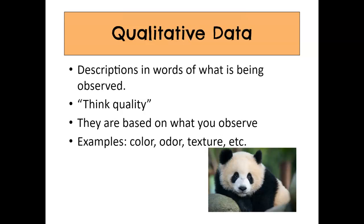The first kind is qualitative data, so think of the quality of something. These are descriptions in words of what is being observed. So again, this is going to be the quality of something and they are based on what we observe - things like color, odor, texture, etc. So I have a picture of a cute little panda bear down here and if I was going to describe this panda bear with qualitative data, I would say his fur is fuzzy, he's black and white, he smells like bamboo. I don't know what bamboo smells like, but you get the gist, right? So you are describing the quality of something.